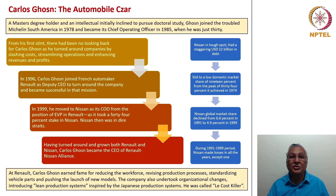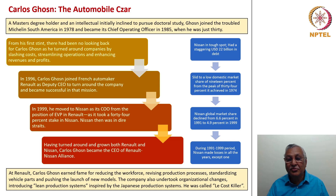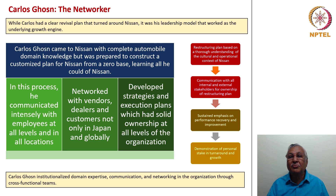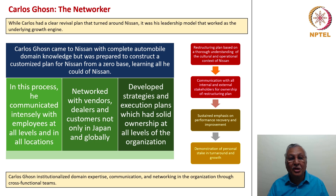At Renault, Carlos Ghosn earned fame for reducing the workforce, revising production processes, standardizing vehicle parts, pushing the launch of new models and introducing lean production systems inspired by Japanese production systems — he was called the cost killer. He was also a networker of great caliber. His leadership model was the underlying growth engine at Nissan. He came with complete automobile domain knowledge but was prepared to construct a customized plan from a zero base, communicating intensely with employees at all levels and locations. He networked with vendors, dealers and customers not only in Japan but also globally, developing strategies and execution plans with solid ownership at all levels.